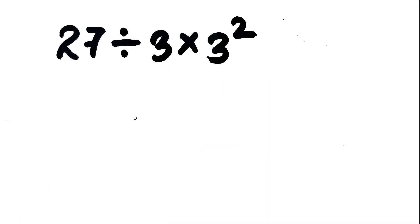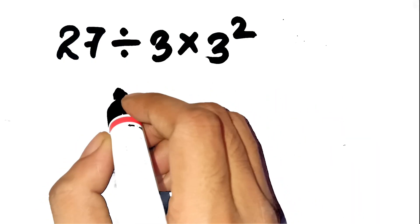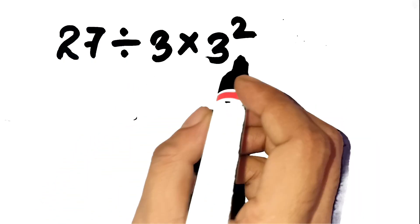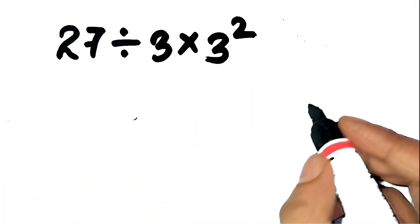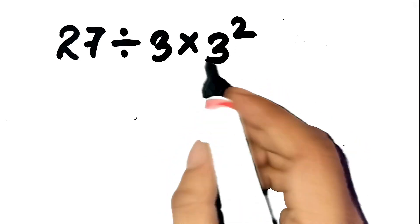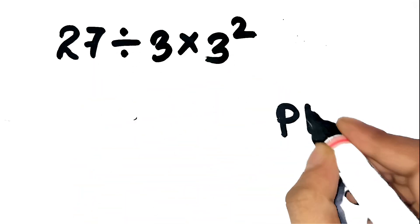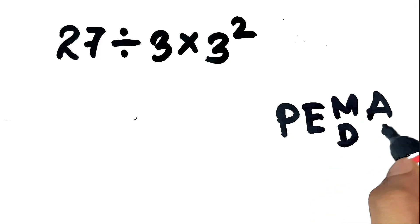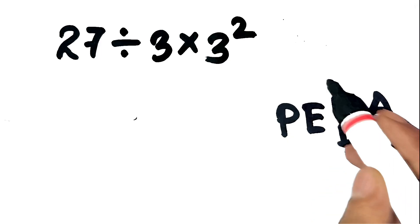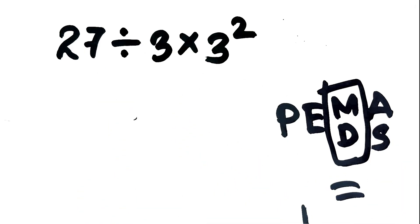Let's get into what's actually going on here. The big misunderstanding is that people automatically multiply 3 by 9 before dealing with the division on the left. But multiplication and division live on the exact same level in PEMDAS — parentheses, exponents, multiplication and division, addition and subtraction. Multiplication and division share equal priority, so when you have a chain like this, you don't jump around. You go strictly left to right.